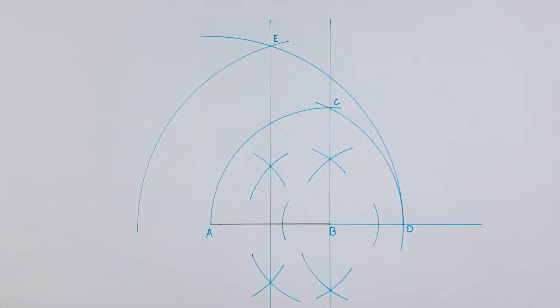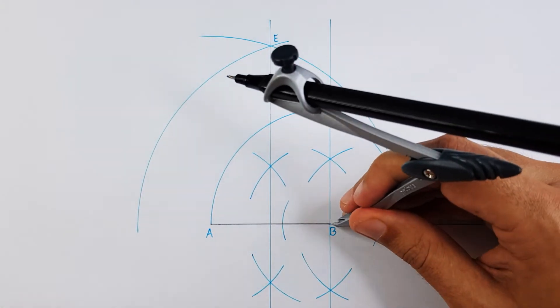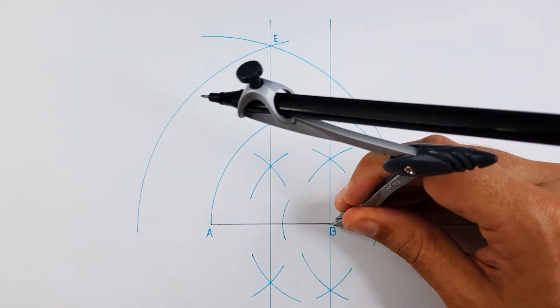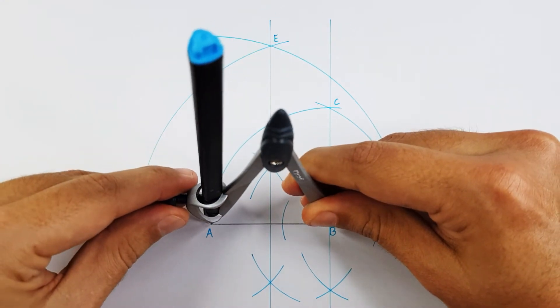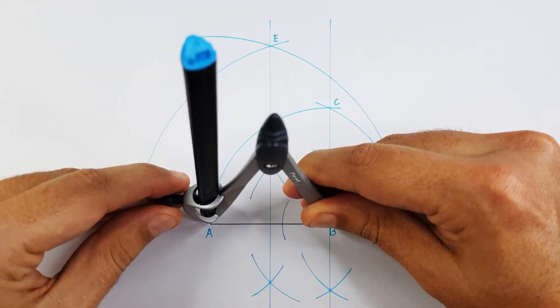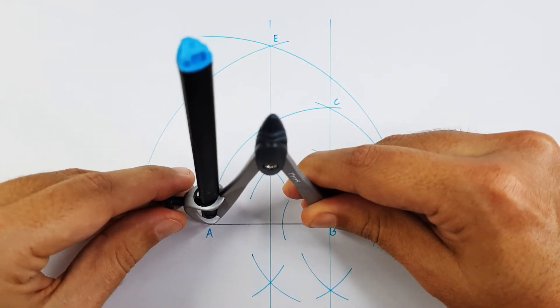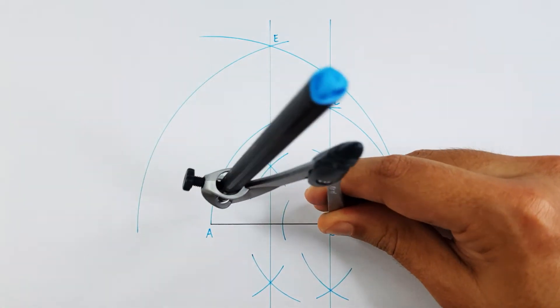Now we can take our compass and adjust it to the full side length, and use this side length to determine the last two points of our pentagon.